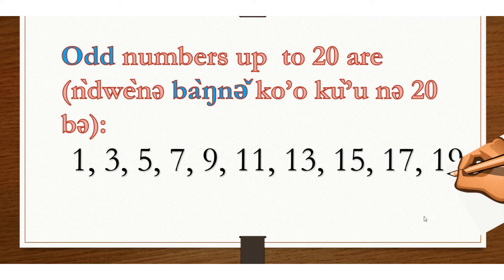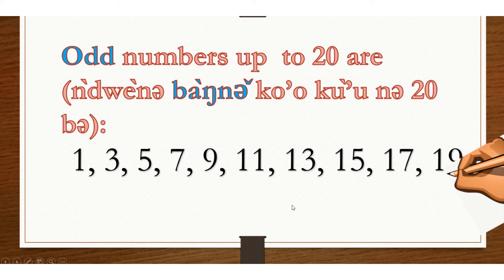Odd numbers up to 20 are: 1, 3, 5, 7, 9, 11, 13, 15, 17, and 19. Those are the odd numbers up to 20.